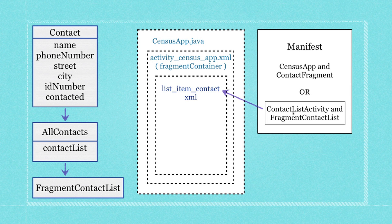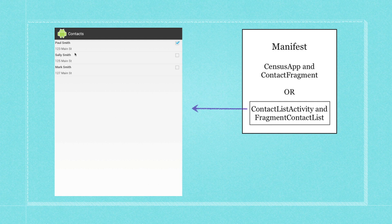To do that we're going to need to use an adapter to connect to our all-contacts array so that we'll be able to display that information through an adapter, and whenever we do it this is basically what it's going to look like. So let's jump over into the code and start making it.